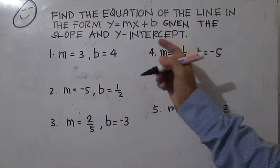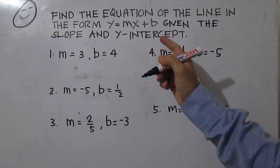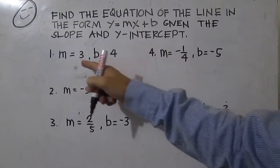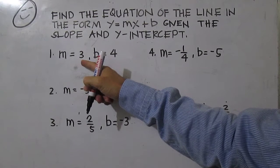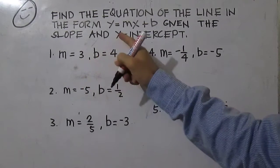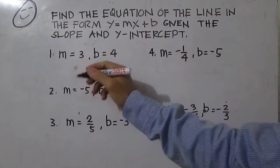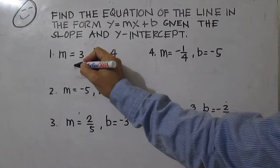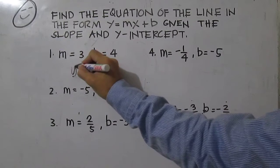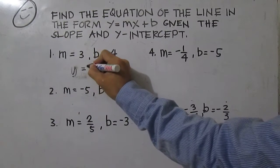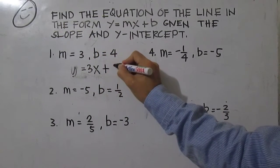To find the equation of the line in the form y equals mx plus b, just substitute the values in place of m and b. For number 1, the equation is y equals 3x plus 4.